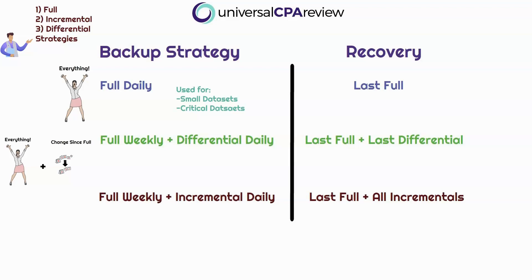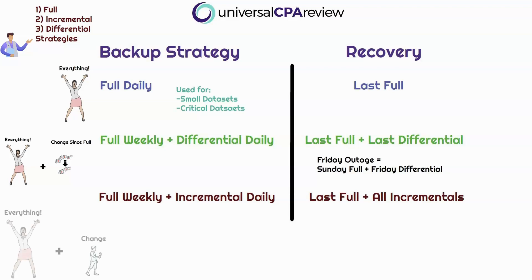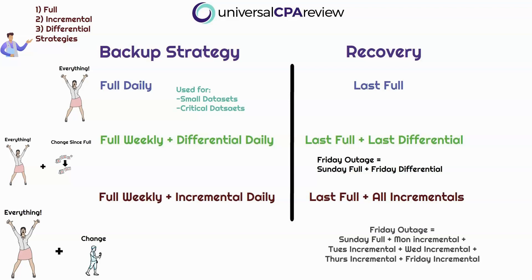For example, if we have an outage on Friday, we use our last full backup from Sunday, and then our differential has captured Monday, Tuesday, Wednesday, Thursday, and Friday. The third backup strategy is full weekly plus incremental daily. To recover, you look at your last full backup plus all incrementals in order. In the example of Friday, you would pull your last full backup through Sunday, and then the Monday incremental, the Tuesday incremental, the Wednesday incremental, the Thursday incremental, and the Friday incremental.